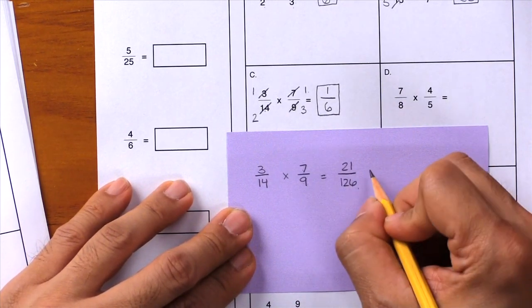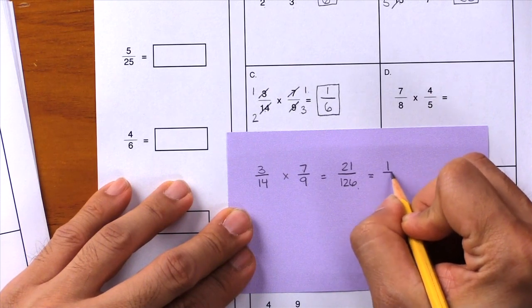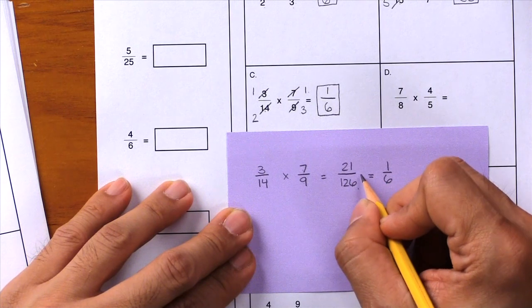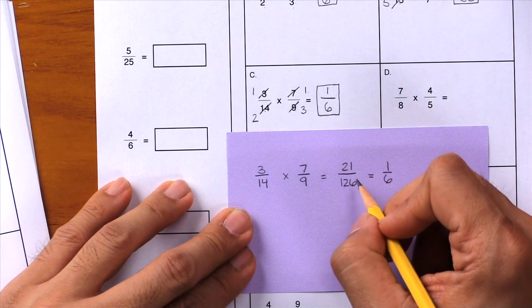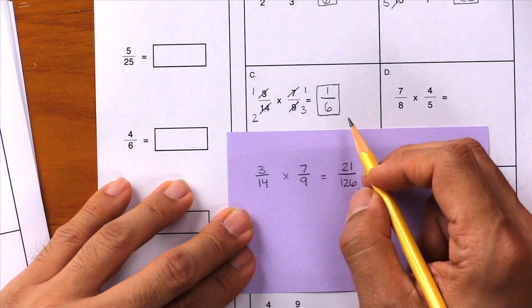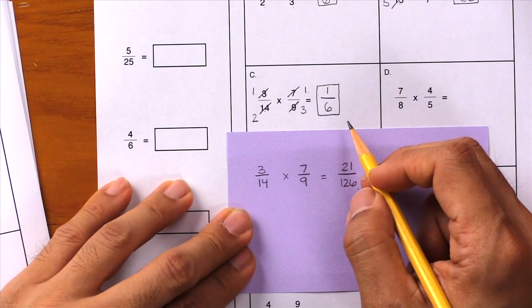But these numbers are much more difficult to work with. That's why, instead of simplifying last, we should simplify first to keep the numbers that we're working with nice and small and easy to work with.